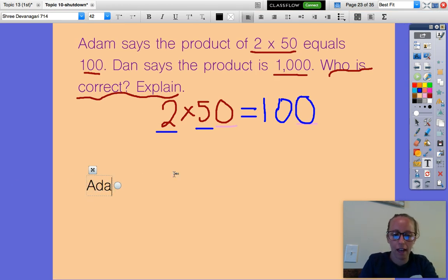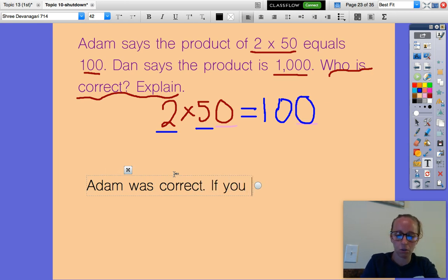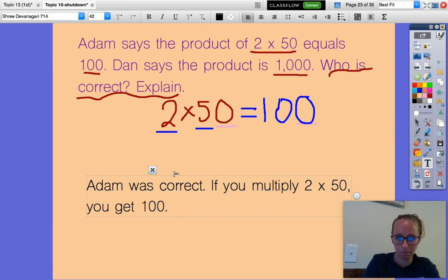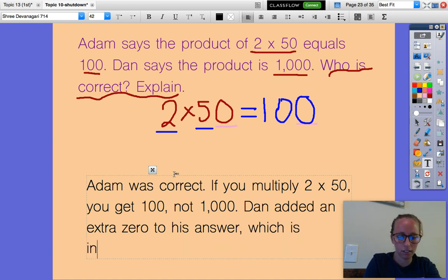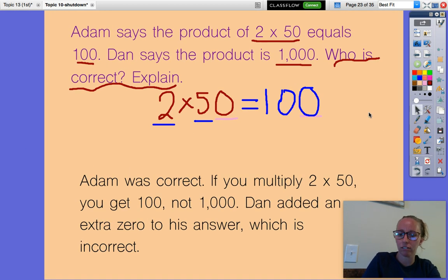Adam was correct. If you multiply two times 50, you get 100, not 1,000. Dan added an extra zero to his answer, which is incorrect. That would be a great explanation to explaining why he got it wrong.